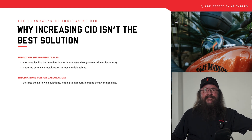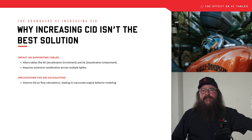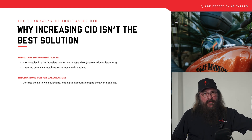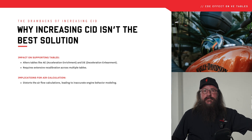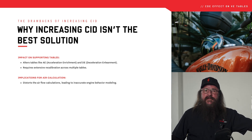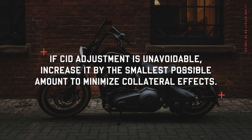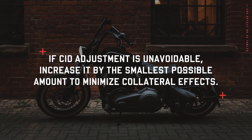Moreover, altering CID distorts airflow calculations, which can lead to inaccurate fuel delivery. If you absolutely must increase CID — if it cannot be handled with the CDE tables, and there are cases for that — it's crucial that you use the CDE tables first and make the smallest adjustments possible to the CID. This will give you a much better running motorcycle.